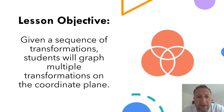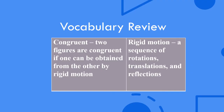Our lesson objective is, given a sequence of transformations, students will graph multiple transformations on the coordinate plane. Let's review two key vocabulary words. The first is congruent. Congruent figures are two figures that are the same size and same shape. In terms of transformations, two figures will be congruent if one can be obtained from the other by rigid motion. A rigid motion is a sequence of rotations, translations, and reflections.